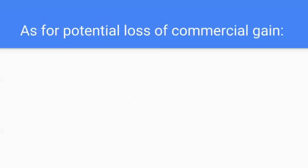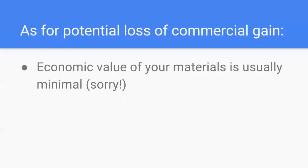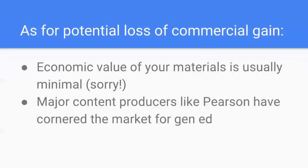To address potential loss of commercial gain: the economic value of materials is usually not that high, especially because colleges and universities across the U.S. are teaching the same basic general education courses. There are thousands of people teaching the same thing and producing the same sorts of materials. Additionally, major content producers like Pearson or Macmillan have universities locked into having students purchase codes to access supplemental materials. So if you're teaching a general ed course, you're probably not going to make a whole lot of money off your materials anyway.